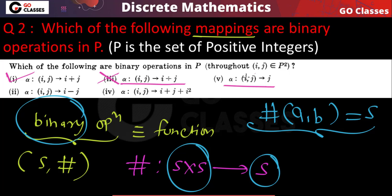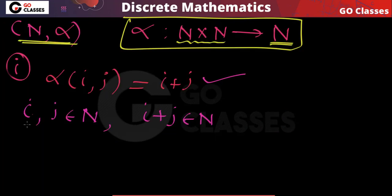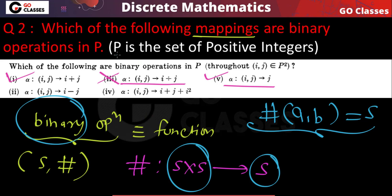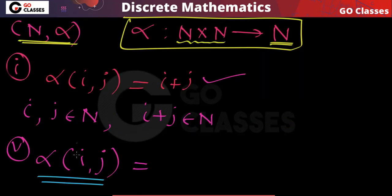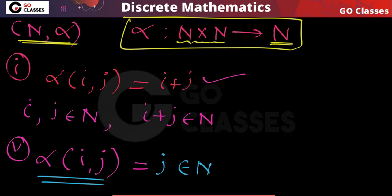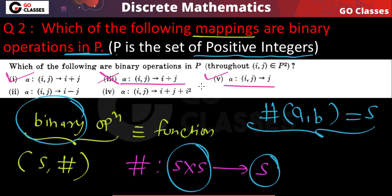Option 5: α(i, j) = j. Here you take two natural numbers i, j and the result is just j. Since j comes from the base set (set of natural numbers), the result always belongs to the set of natural numbers. So this is closed — it is a binary operation.